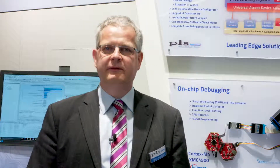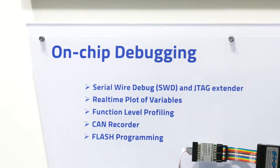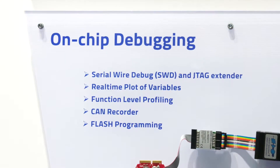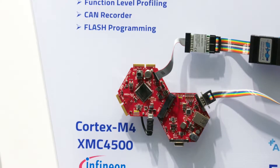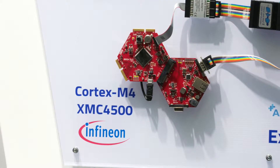Our third example is debugging of a small Cortex M4 device. Here we use the XMC 4500 from Infineon, and we show debugging via SWD or JTAG interface, real-time plot of variables, flash programming, function profiling on a statistical basis, CAN recorder, and also scripting.